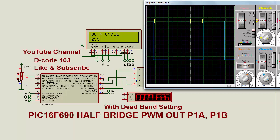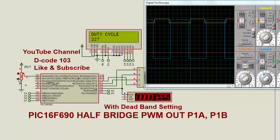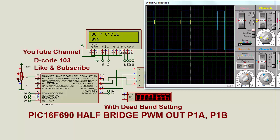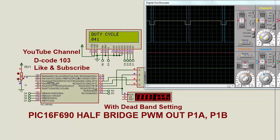The duty cycle we control from the analog signal. The duty cycle is now 456. And now it is in the middle, at the 50% point.